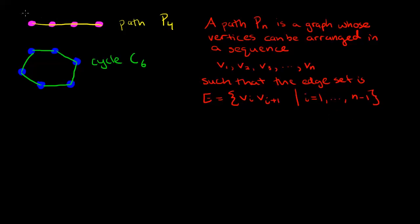If we label our little example with V1, V2, V3, V4, we can see that our edge set does indeed consist of the edge V1, V2, then V2, V3, and then V3, V4. So it satisfies exactly this definition, but we can imagine this as generalizing to n vertices.